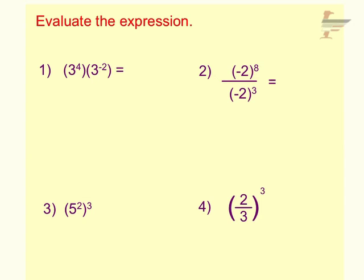Here we have just a few basic examples to talk about the properties that you just saw. Number one: we can see that we have a base of 3 and a base of 3, so because we're multiplying the same base we keep our base of 3 and our property tells us that we will add those two exponents. So 4 plus negative 2 is actually 2, and 3 squared is 9.